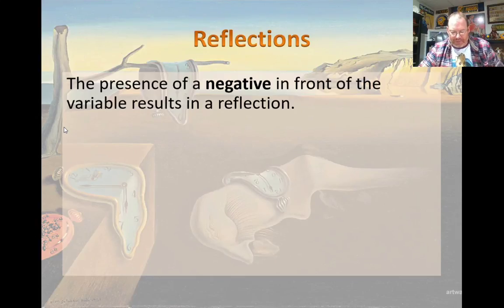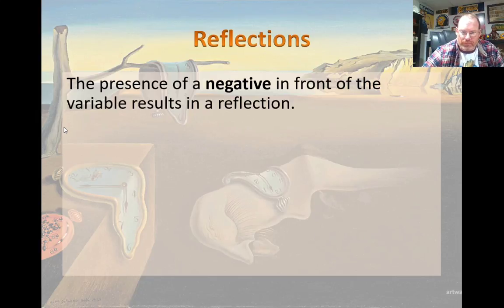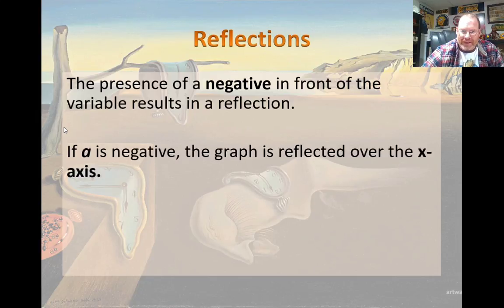Alright gang, the last type of transformation that we're going to talk about is that of the reflection. We talked in the last video about the A term, how that makes it skinnier or fat. Well, if it's positive or negative determines whether or not it's reflected across the x-axis. If A is negative, it's reflected over the x-axis.